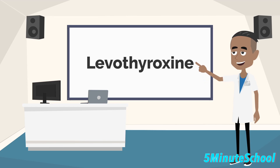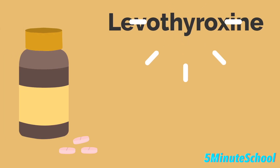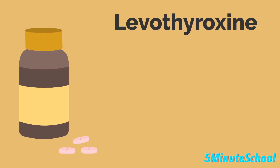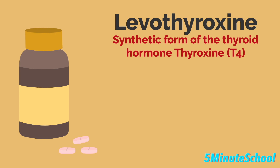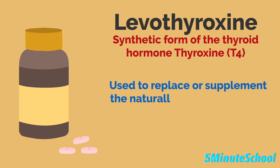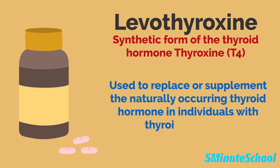In today's video we're going to be talking about levothyroxine — its uses, pharmacology, side effects and dosage. Levothyroxine is a synthetic form of the thyroid hormone thyroxine T4, and it's used to replace or supplement the naturally occurring thyroid hormone in individuals with thyroid disorders. We're going to talk about its mechanism of action and other important details in today's video.